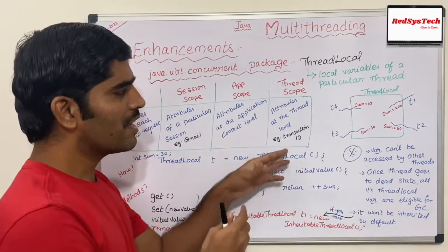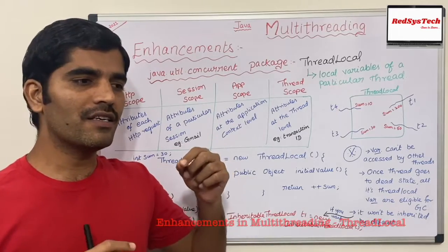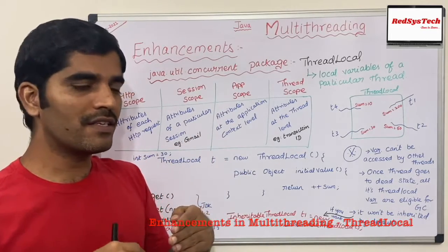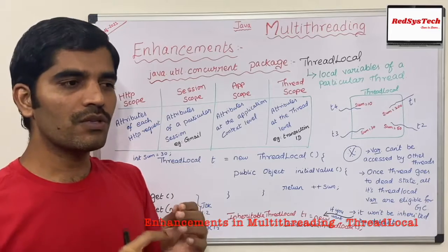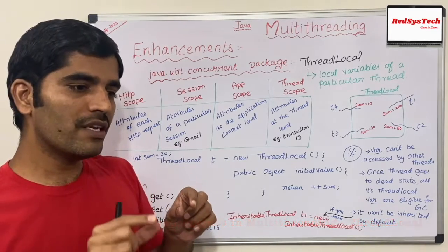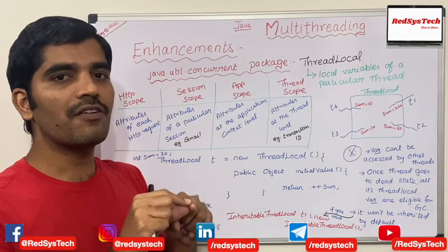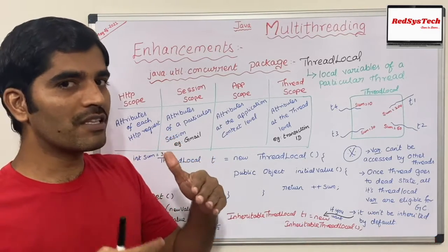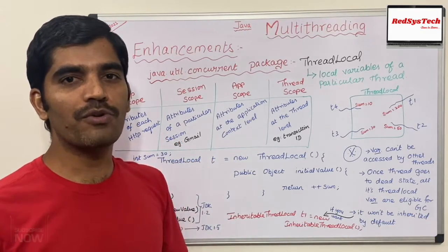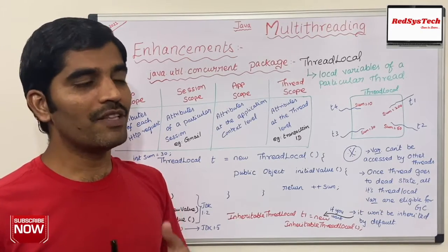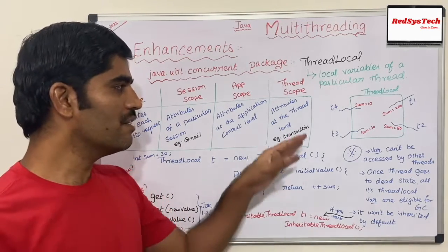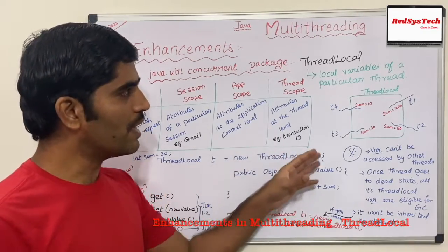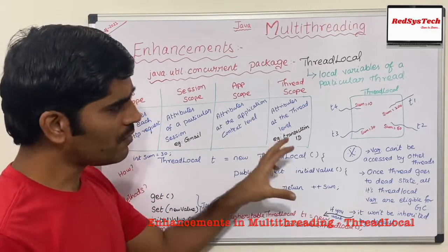A good example is transaction ID. In a multi-threaded environment, when a thread is executing a transaction, that transaction ID should be specific to that particular thread. Otherwise, you won't know which thread executed which transaction and there is no way to debug issues or track them. With the help of transaction ID scoped to a thread, you can identify which thread executed that particular transaction. That is how thread scope actually works.